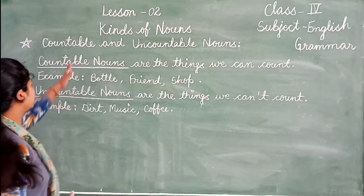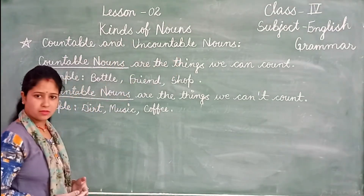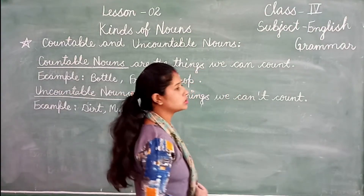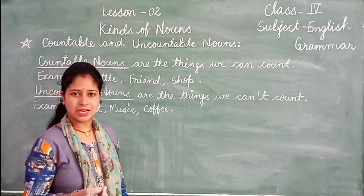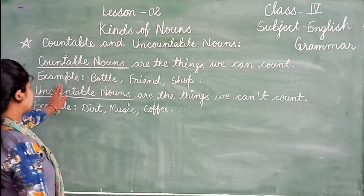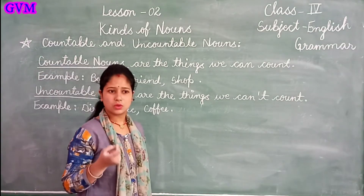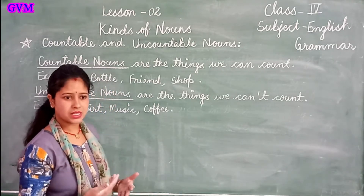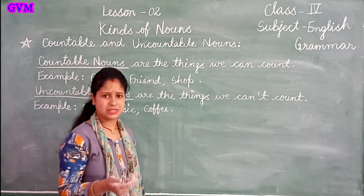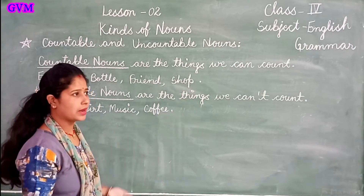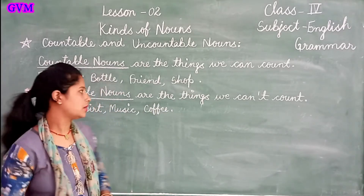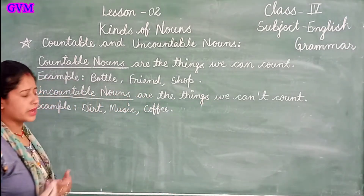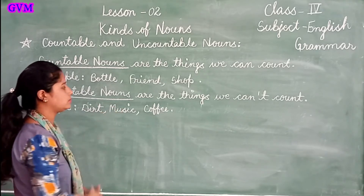Now we will read about countable and uncountable nouns. Countable nouns are things we can count — for example, bottles and shops. Things that we can easily count are called countable nouns. Uncountable nouns are things that we cannot count — for example, music.